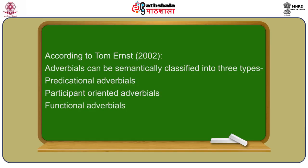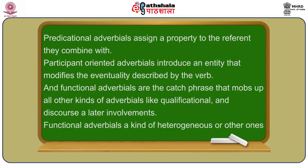Adverbials can be semantically classified into three main types: predicational adverbials, participant-oriented adverbials, and functional adverbials. This classification of adverbials comes from Tom Ernst, found in his 2002 book. Predicational adverbials assign a property to the referent they combine with. Participant-oriented adverbials introduce an entity that modifies the eventuality described by the verb. Functional adverbials is a heterogeneous class that mops up all other kinds of adverbials, like quantificational and discourse-related ones.